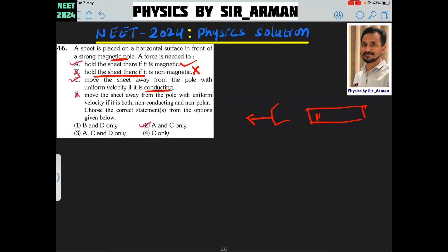Then due to the changing flux, eddy currents will generate. And what will happen? A south pole will generate and this sheet will attract it by the magnet. So to move it with constant velocity, you need to apply an equal and opposite force such that it moves with a constant velocity. So this is correct.